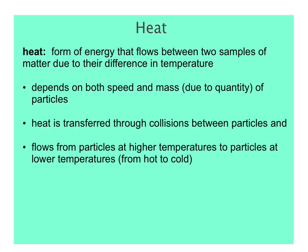Heat is different than temperature. Heat is a form of energy that flows or is transferred between two substances that have different temperatures. The amount of heat transferred depends on the difference in temperature between the substances and how much of each substance you have — heat also depends on mass due to the quantity of particles. Heat can only be transferred when substances come in contact, and it flows in one direction only: from hot to cold.